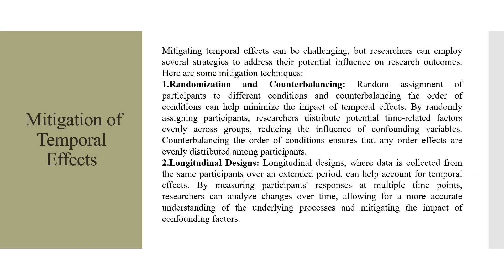To mitigate temporal effects, researchers can use randomization and counterbalancing. Random assignment of participants to different conditions and counterbalancing the order of conditions can help minimize the impact of temporal effects. By randomly assigning participants, researchers distribute potential time-related factors evenly across groups, reducing the influence of confounding variables. Counterbalancing ensures that any order effects are evenly distributed among participants.